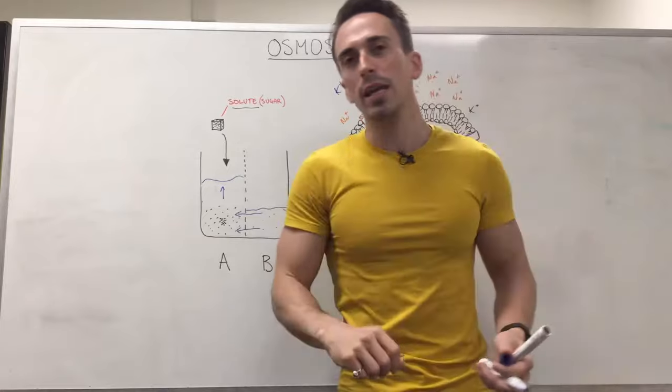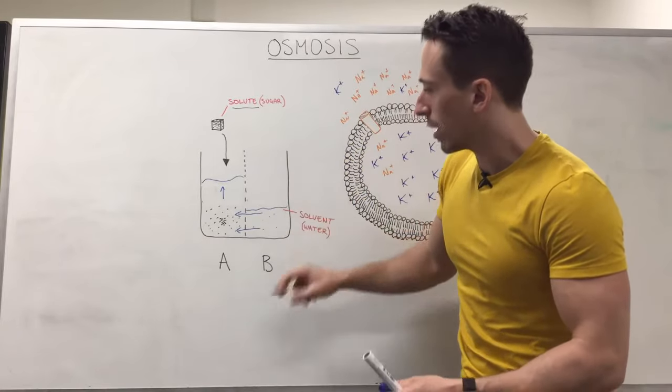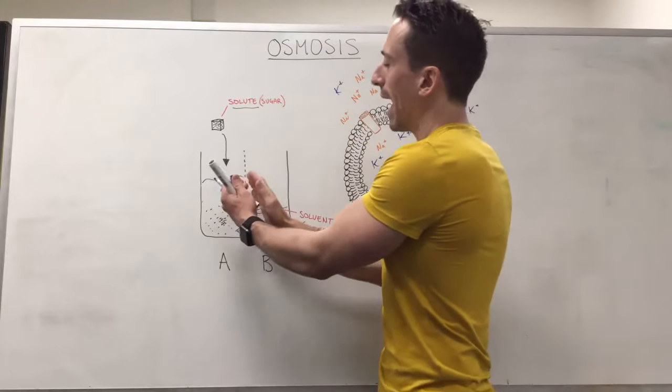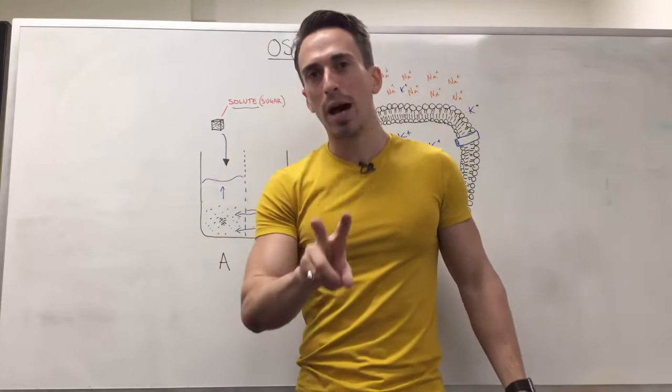Now what's going to happen is side B will become more concentrated, side A will become less concentrated, and it will become evenly concentrated amongst the two compartments.